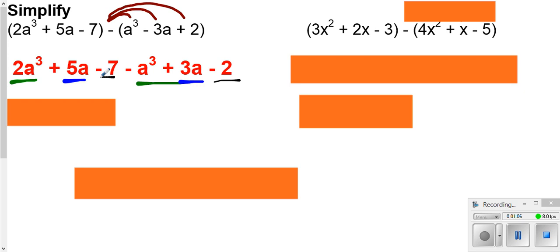Remember, constants are those that have no variables. So if we put those together, 2 of the a cubes plus the negative 1 of the a cubes is 1 of the a cubes. 5 of the a's plus 3 more of the a's is a total of 8 of the a's. And then we get our negative 9.